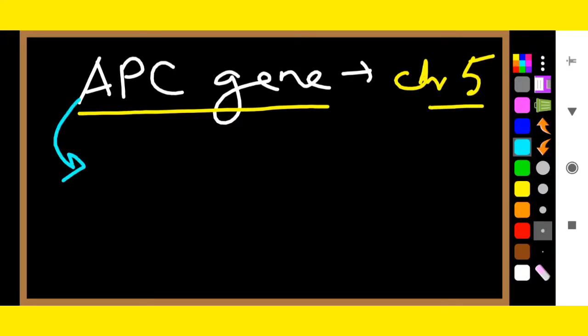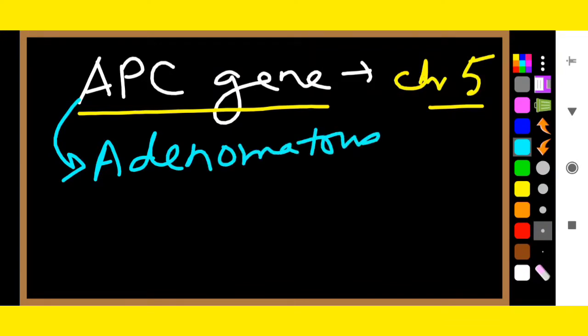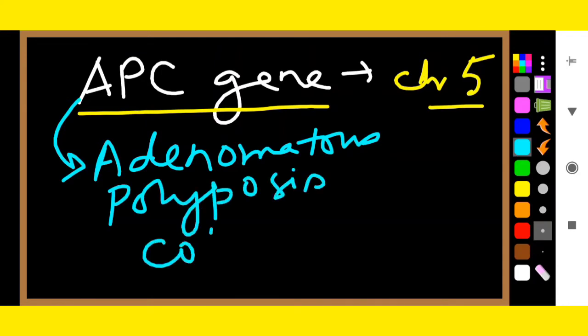What is the full form of APC? APC means Adenomatous Polyposis Coli. This is the name of the gene on chromosome number five that is responsible for Gardner syndrome.